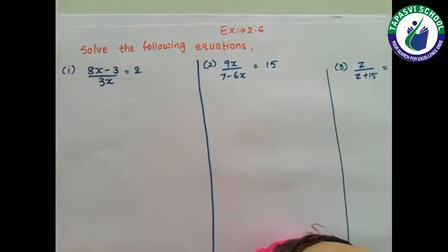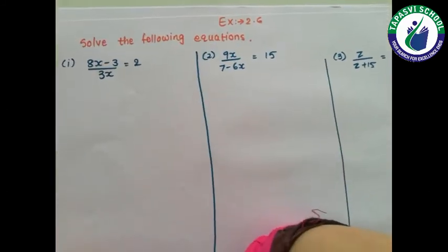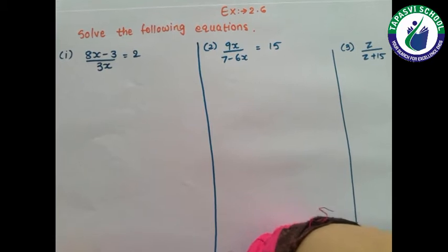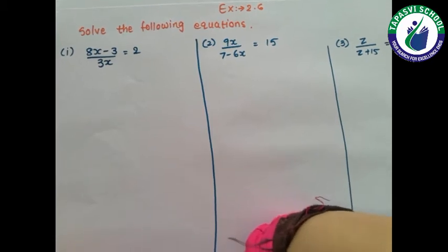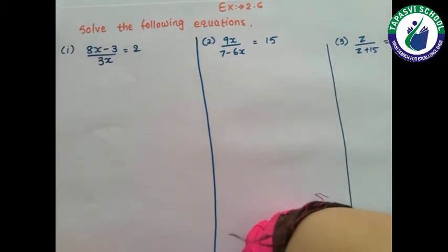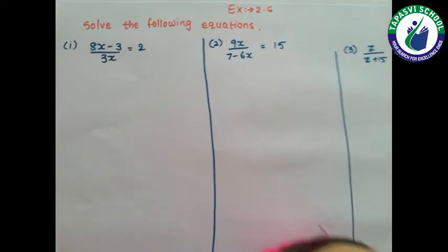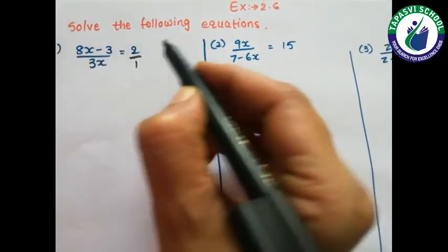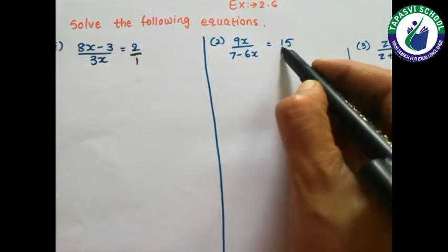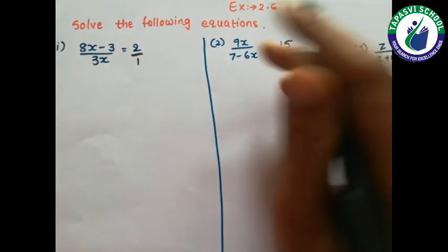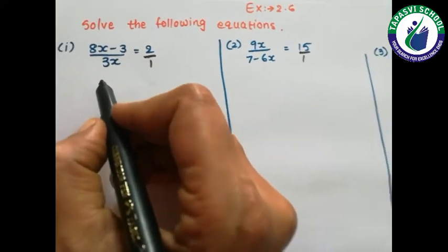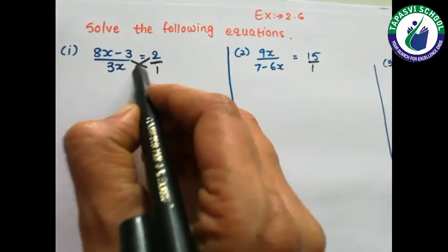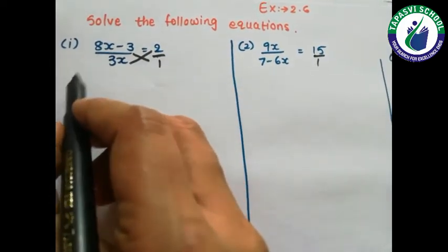Now students, in our next exercise 2.6, the same type of equations are given which we are going to solve. As I told you earlier, whenever only two terms are there opposite to each other we will go with the cross multiplication method.